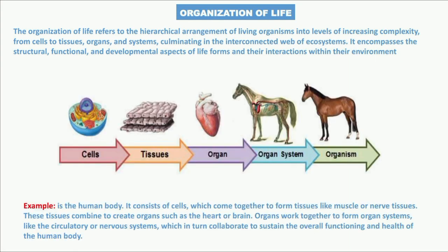For example, in the human body, cells come together to form tissues like muscle or nerve tissue. These tissues combine to create organs such as the heart or brain. Organs work together to form systems like the circulatory system, nervous system, or digestive system, which collaborate to sustain the overall functioning and health of the human body.